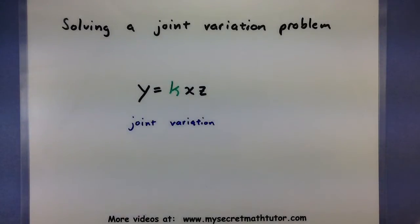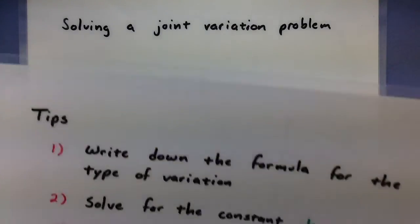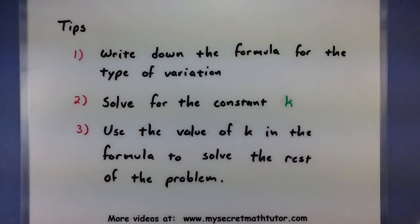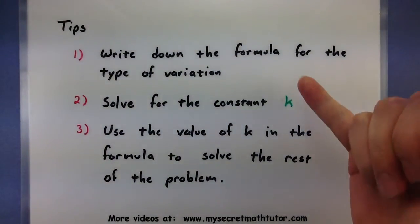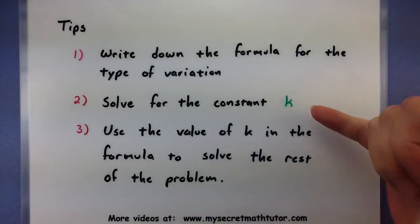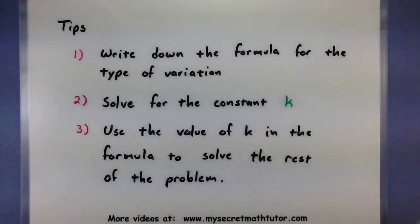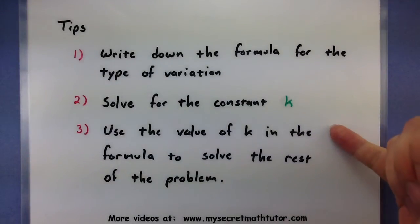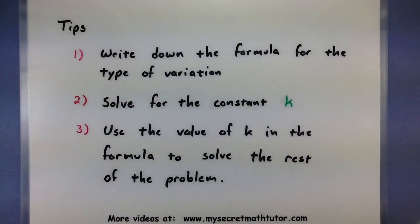Let's jump into the problems and see what we can do to solve a few of these. With any type of variation problem, you want to write down the formula first. That way you have some sort of base starting line. Then we'll use a bit of the information to solve for the unknown k inside the problem. Once we have that value of k, we'll be able to solve the rest of the problem using the remainder of information. Let's see what one of these looks like.